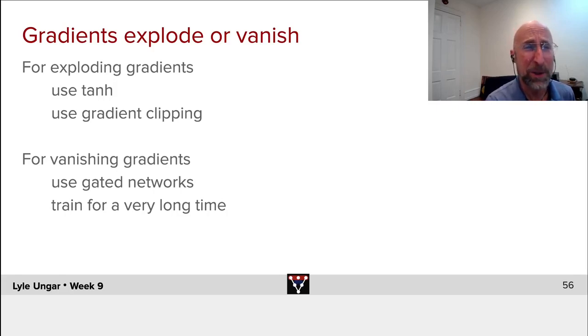The other direction, vanishing gradients, where you multiply something by something by something by something, it's smaller and smaller, harder to deal with. LSTMs and GRUs tend to be ways that attempt to do this. But it can mean still that training can be rather unpleasantly slow.